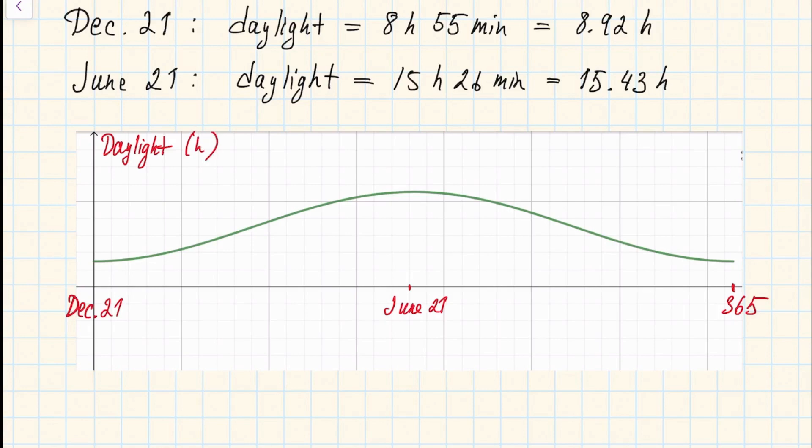So we can see that first of all the amplitude A here will be 15.43 minus 8.92, so in this particular case it will be 6.51. So to find this constant little a, you have to divide the amplitude by 2, so in this particular case it's going to be 3.255.